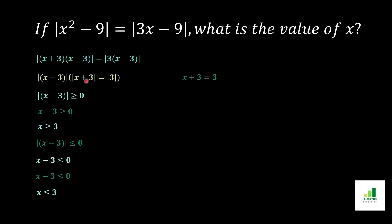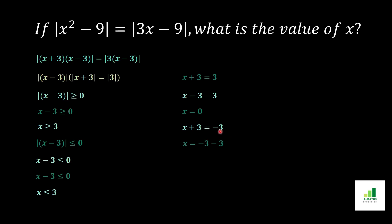Now we solve the second part of the expression. The first condition is x + 3 = 3: moving +3 to the other side gives x = 3 - 3, so x = 0. The second condition is x + 3 = -3: moving +3 to the other side gives x = -3 - 3, and the two negatives add together to give x = -6.